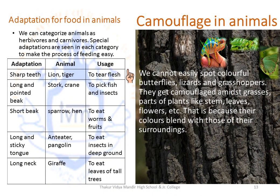Adaptation for food in animals is discussed briefly here and will be covered in detail in the later chapter on nutrition. We can categorize animals as herbivores and carnivores, with special adaptations in each category to make feeding easy. The long and pointed beak of stork and crane help them to pick fish and insects. Short beaks of sparrow and hen help them eat worms and fruits. The long and sticky tongue of anteaters and pangolin help them eat insects deep in the ground. The long neck of the giraffe helps it reach leaves on tall trees for feeding.